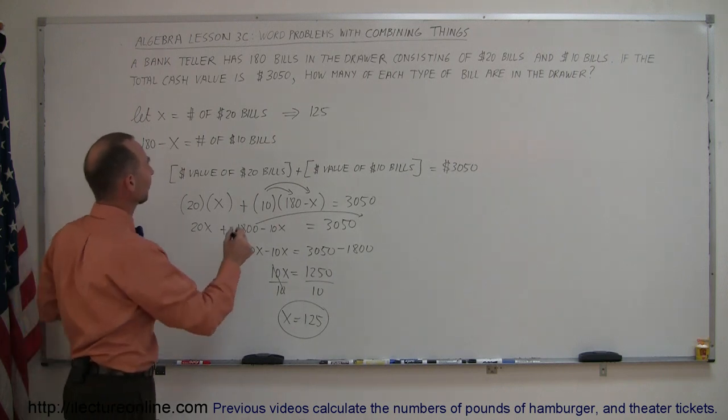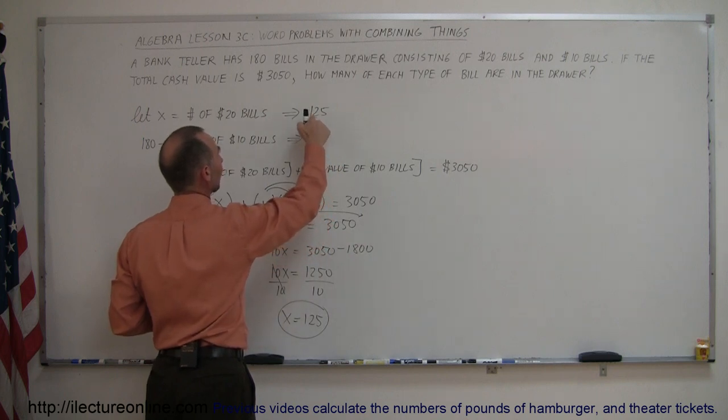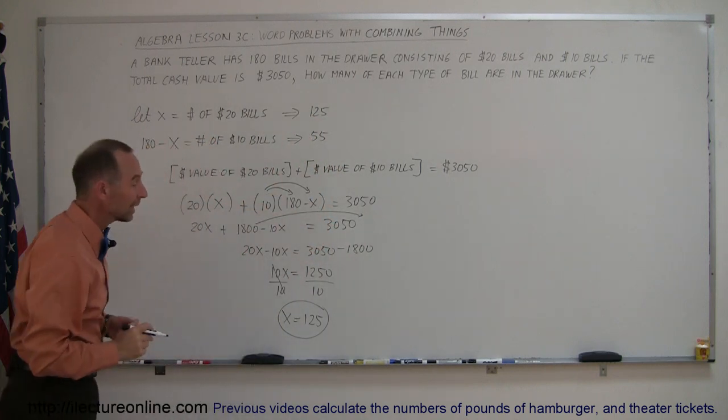that is 55. Okay, that means there are 55 $10 bills. 55 plus 125 is 180, and that's the answer.